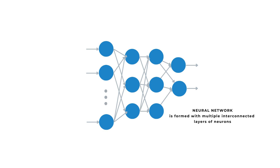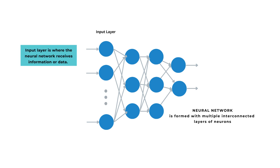Let's explore the different layers present in a neural network. The input layer is where the neural network receives information or data — it could be pixel values from an image, numerical features or any other type of input. Think of it as the entry point for our data into the network.